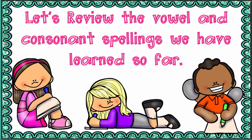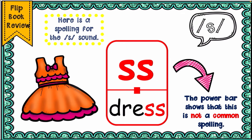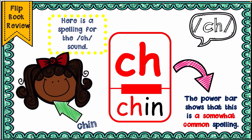Now let's review vowels and consonant spellings we have learned so far. Remember, in grade one you need to learn sounds — without the sounds you won't be able to pronounce or spell words properly. We have the /ʌ/ sound as in 'stuff', the /ɛ/ sound as in 'dress', the /z/ sound as in 'booze', and the /ch/ sound as in 'chin'.